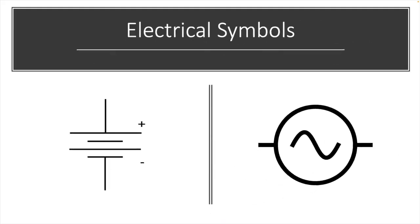Now this is the electrical symbols for AC and DC. To the left, we have a DC power cell — two cells — and you can see it's polarized. The longer line at the top represents the positive and the shorter line at the bottom represents the negative. To the right is an AC waveform symbol. It's not polarized, so you just have the symbol for an AC waveform.